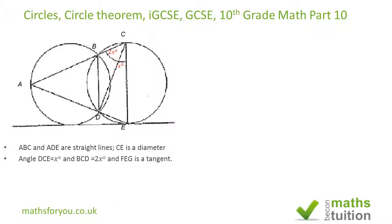It then says find in terms of x: the angle ABD, the angle DBE, and the angle BAD. So what I've done is I've called this angle Z to make life easier for myself.